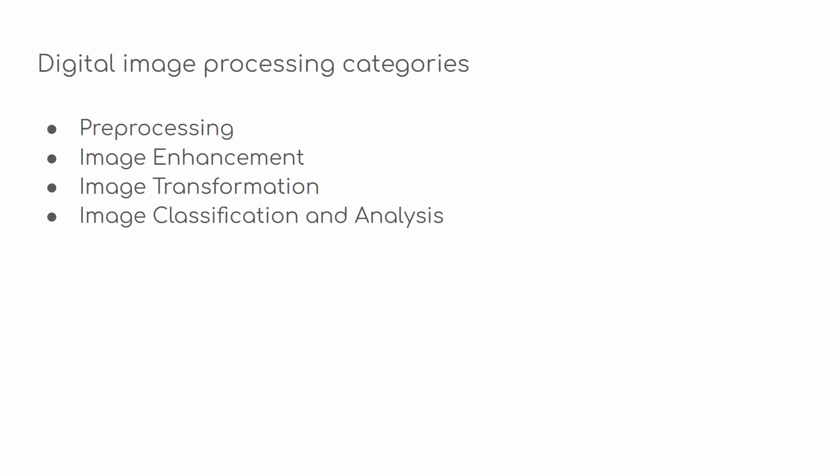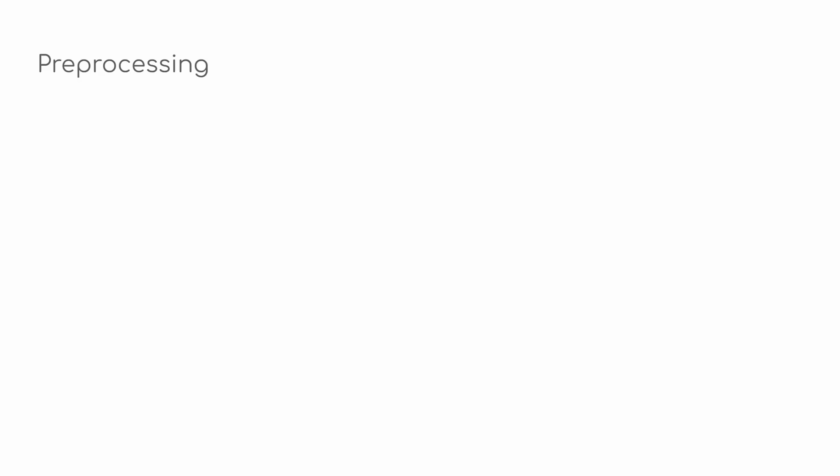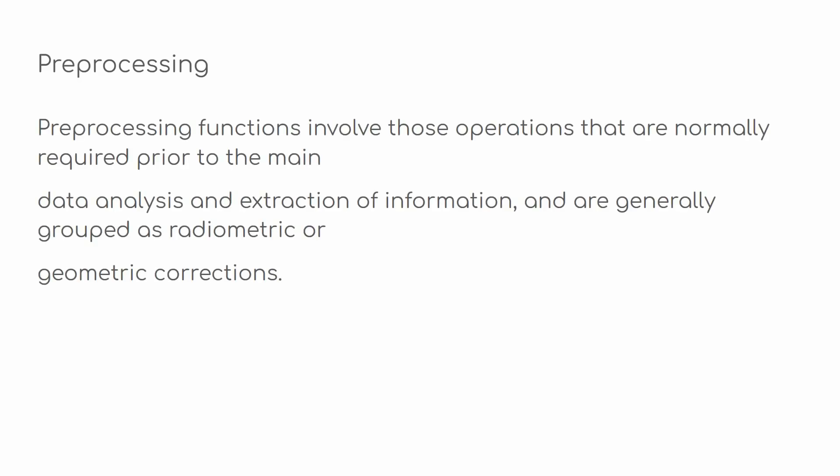Starting with pre-processing: pre-processing is sometimes referred to as image restoration or rectification. It involves restoring and rectifying images for distortions that are unique to the sensor, the satellite platform, or the platform carrying the sensor. We have two types: geometric distortions and radiometric distortions.